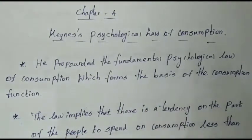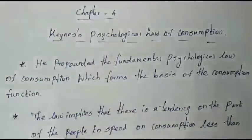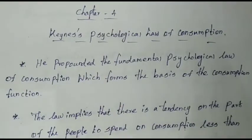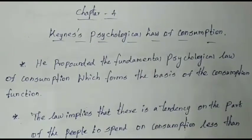The topic is the Psychological Law of Consumption. In the last video we talked about the consumption function. This is the fourth chapter, first part: consumption function. We will talk about equations and the mathematical aspect of the Psychological Law of Consumption.